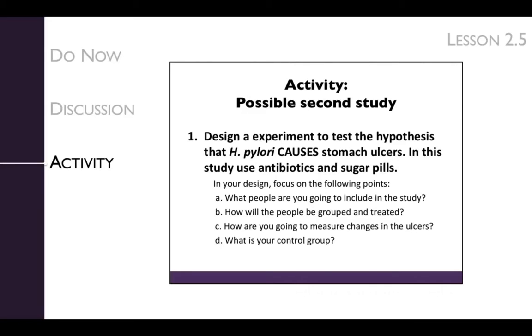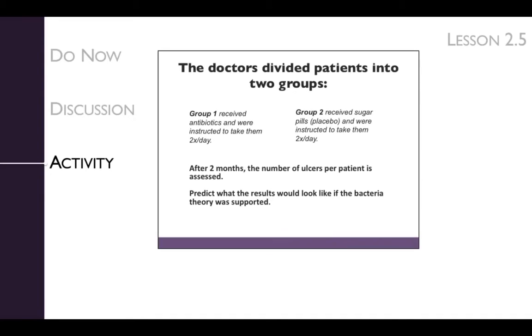When all the groups have a design, have them report out to the class. It is important to note that students usually have a lot of questions relating to who to include in the study, how to treat them, and how to measure changes in ulcers. So be sure to review the content for this activity carefully before running the case. After the students have had a chance to share their experimental designs, show them how the doctors chose to proceed. In brief, patients with ulcers were broken into two groups. One received antibiotics, and one received sugar pills.